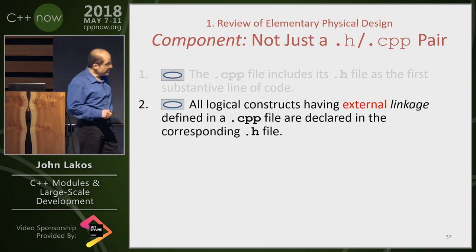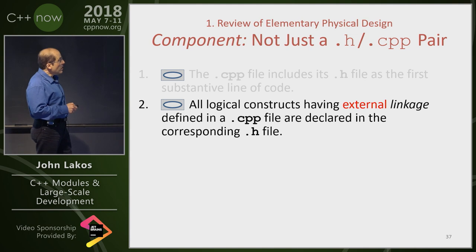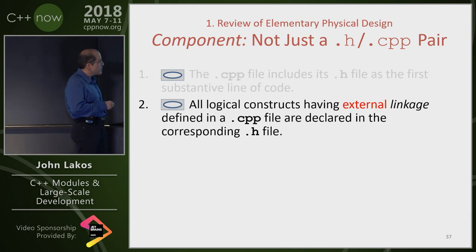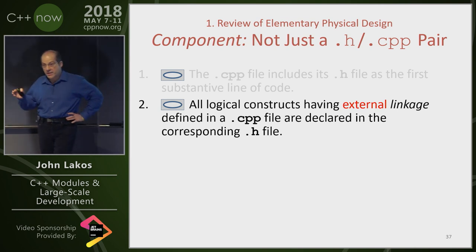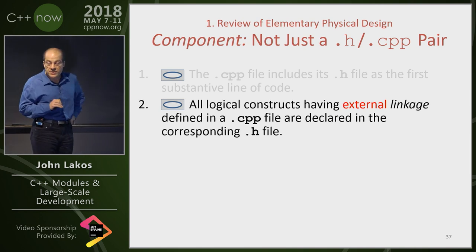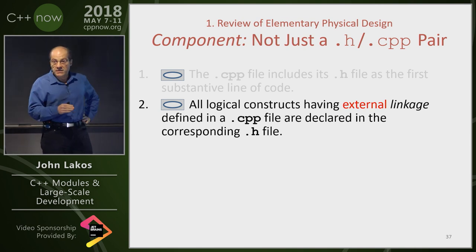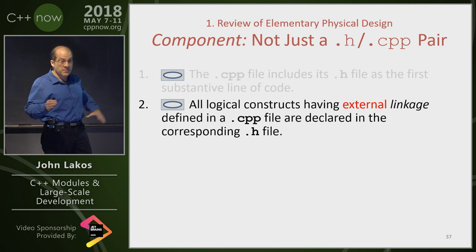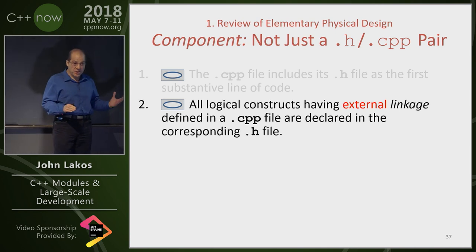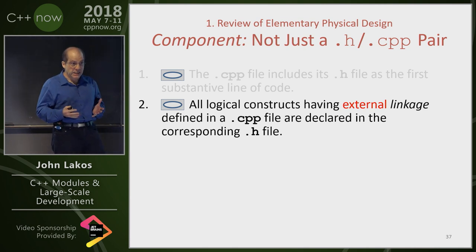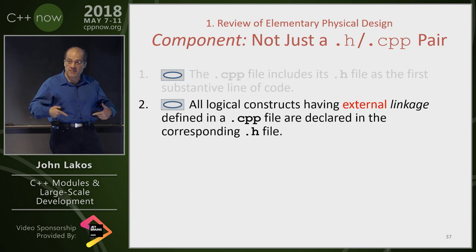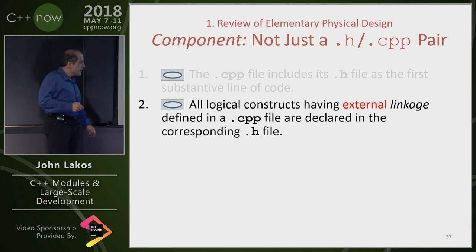What does linkage mean? External linkage means the thing can be referred to from separate translation units — I can have a declaration in one translation unit and another in a different translation unit, and those two declarations refer to the same entity. So if something can be referred to outside of the translation unit in which it's defined, it must be declared in the .h file. This ensures that if something leaks out at the ABI level, a human being knows about it.